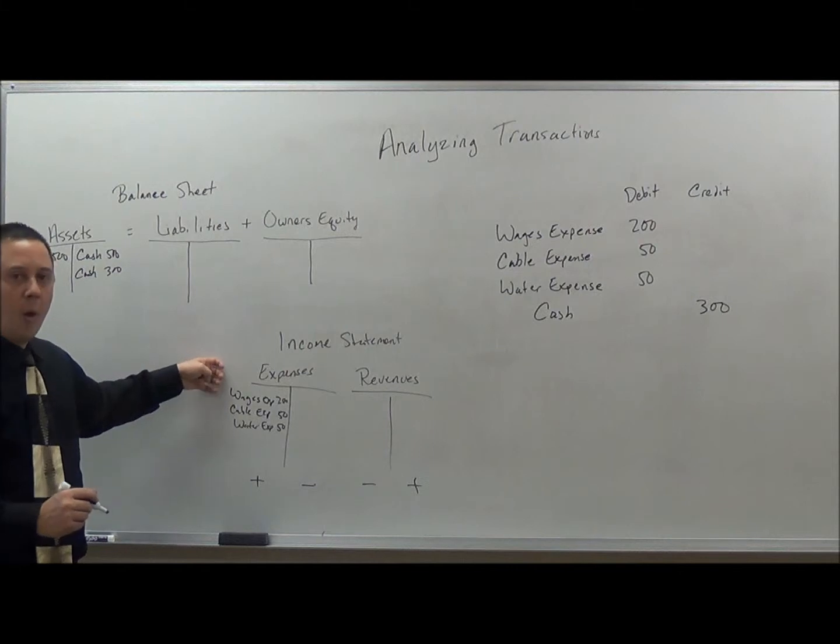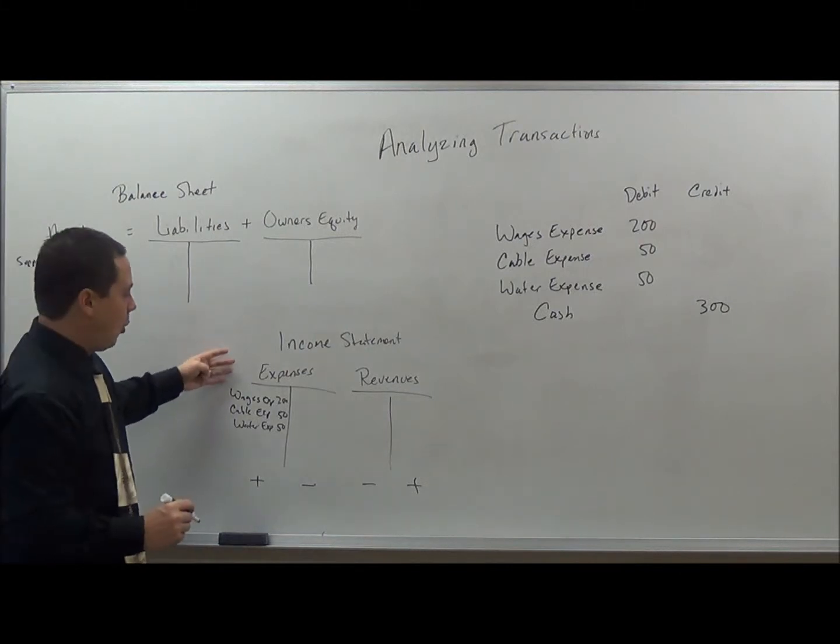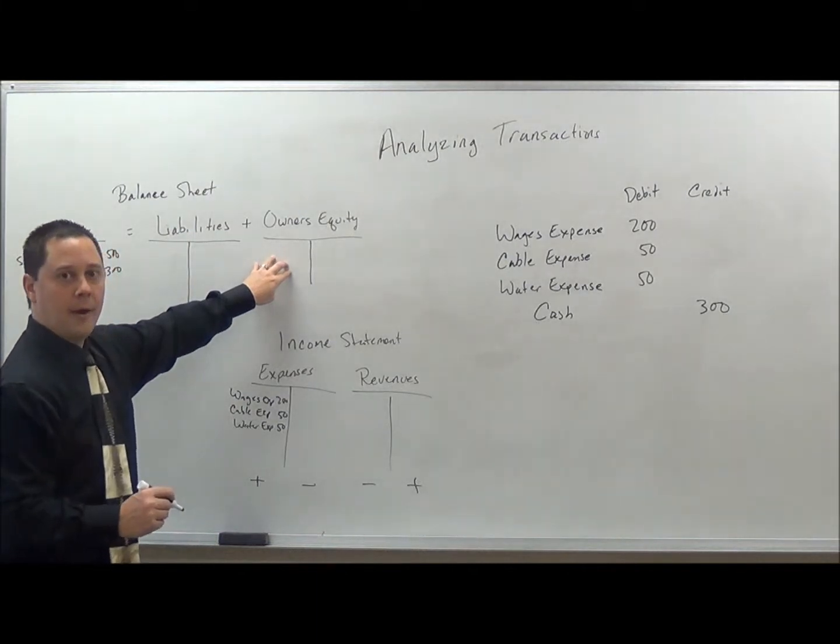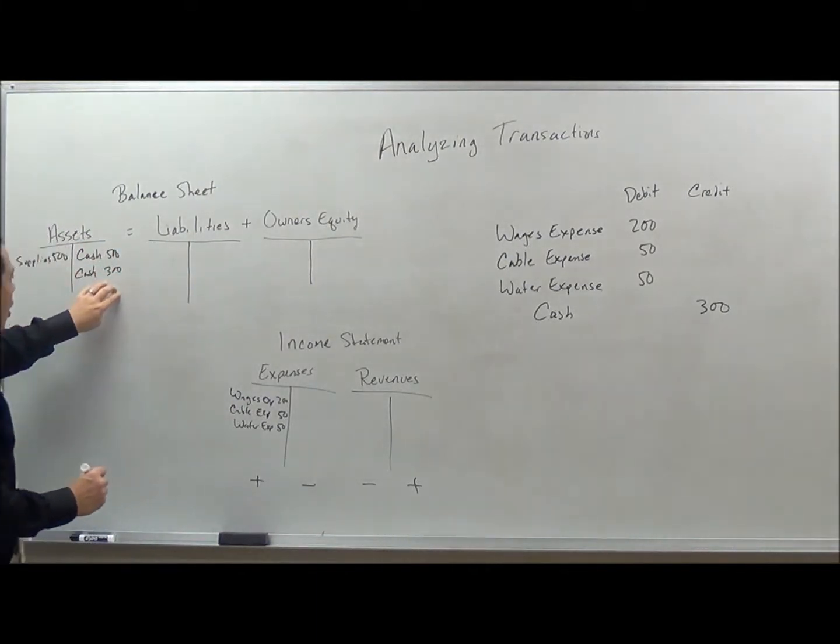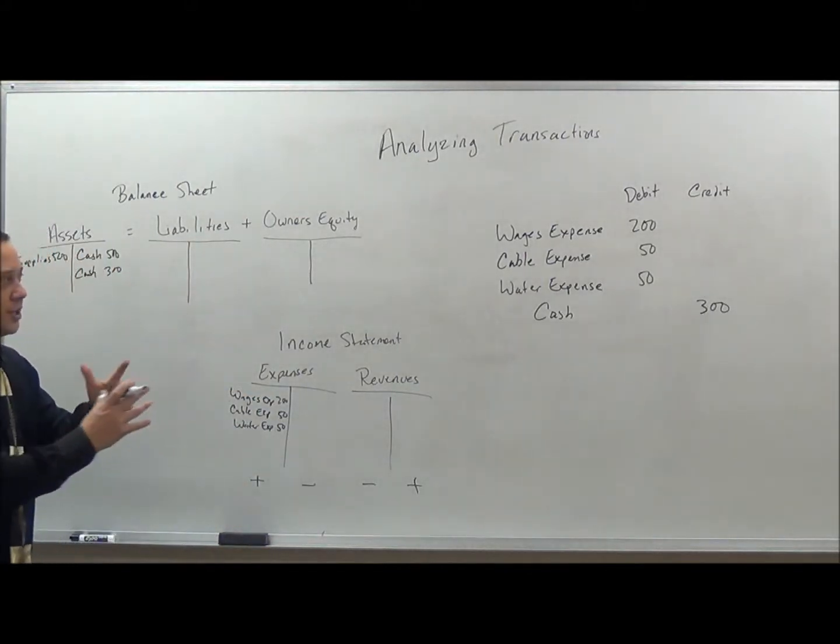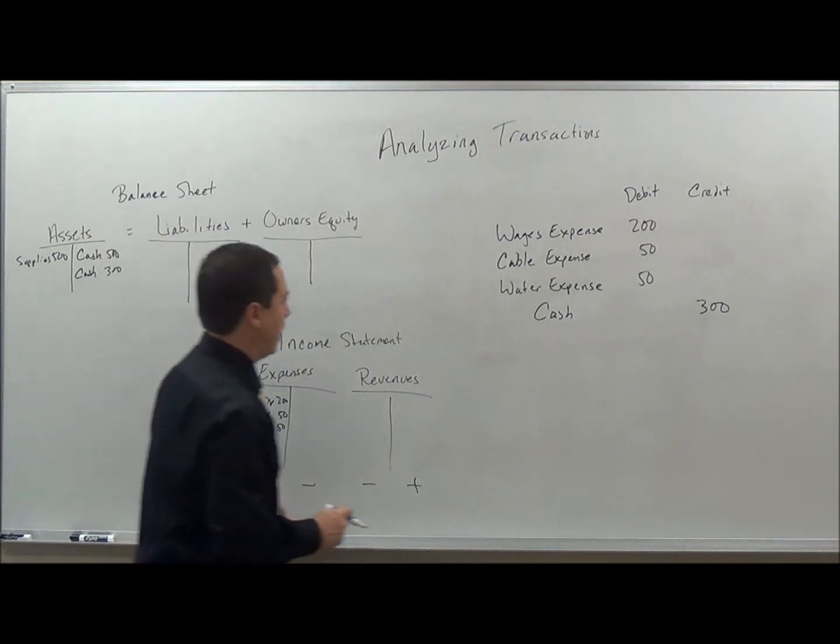What this is doing is taking away from my overall net income. I am lowering my net income, therefore lowering my owner's equity and then also lowering my asset here. So as you can see, this is how it works together. So this is another problem that we have done.